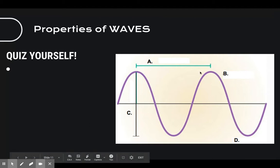Okay. A is wavelength. B is crest. C is amplitude. D is trough.